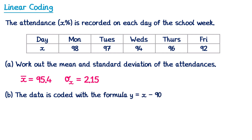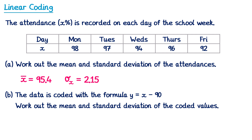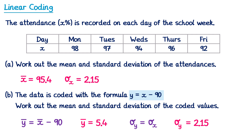Now for part b, the data is coded using the formula y equals x subtract 90, so we subtract 90 from each of the attendances. We need to work out the mean and standard deviation of the coded values, the y values. Here we've coded by subtracting 90, which will affect the mean but won't affect the standard deviation. So the new mean y bar will be the original mean subtract 90. The original mean was 95.4, so the coded mean is 95.4 minus 90, which equals 5.4. And the coded standard deviation sigma y will be the same as the original standard deviation sigma x, which is 2.15.